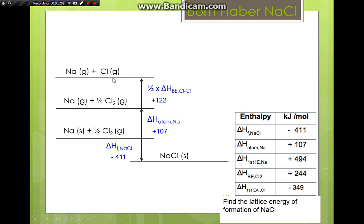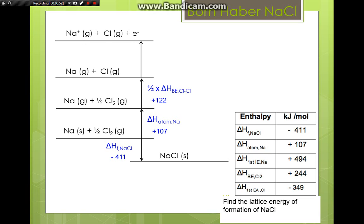The next step is to form the atoms into ions. To form sodium ions, we remove one electron from sodium — this is the first ionization energy of sodium. Since we must overcome the attractive force, this is a positive value: +494 kJ/mol, so the energy level increases.